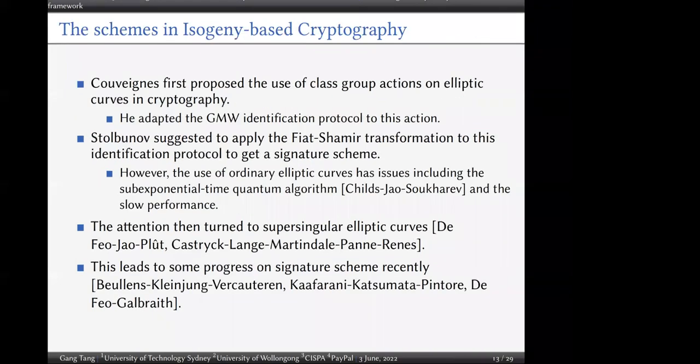In isogeny-based cryptography, Couveignes first proposed the use of class group actions on elliptic curves in cryptography. He adapted the GMW identification protocol to this action, and Stolbunov suggested applying the Fiat-Shamir transformation to get a signature scheme. However, using ordinary elliptic curves has issues including a sub-exponential time quantum algorithm and slow performance, which led subsequent works to focus on supersingular elliptic curves — so-called SIDH or CSIDH — and has also led to some progress on signatures recently.